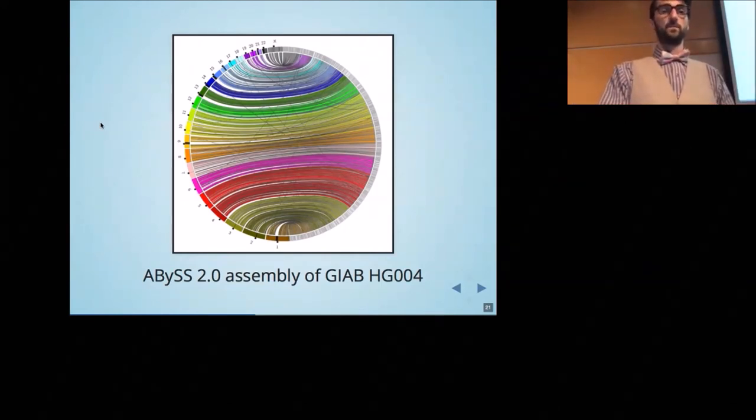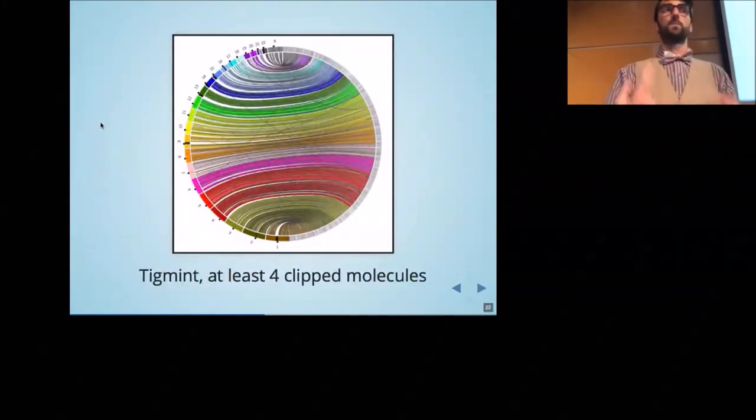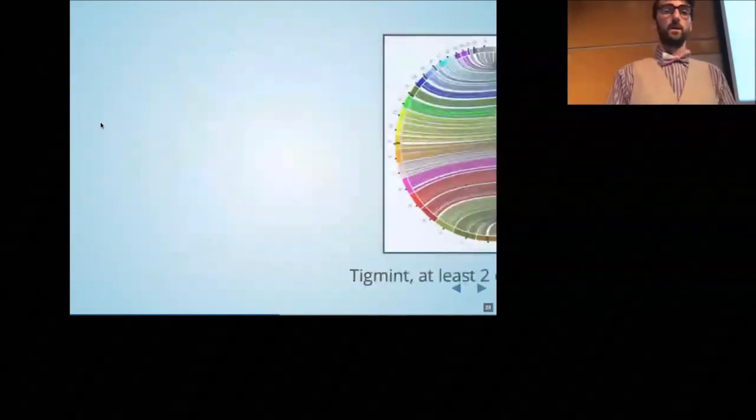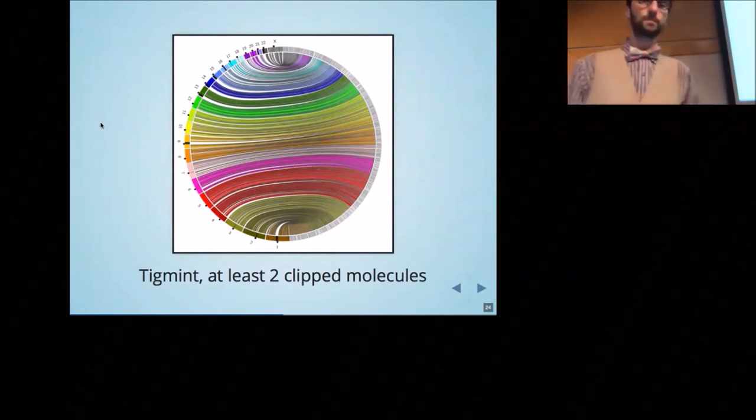This is the assembly before running Tigmint and after running Tigmint. A number of these misassemblies—these translocations—are corrected. By adjusting parameters to make it more sensitive, we can eliminate even more of these misassemblies, and eventually all of these translocations are eliminated. So the tool is working well.